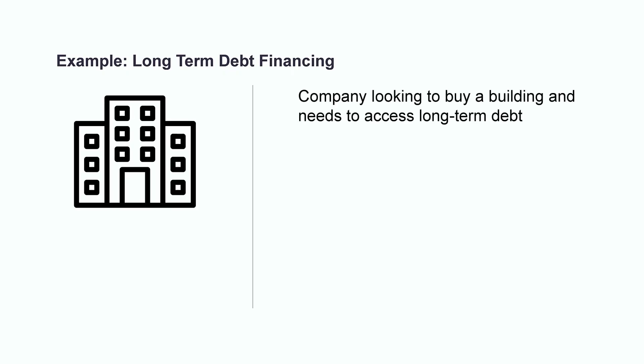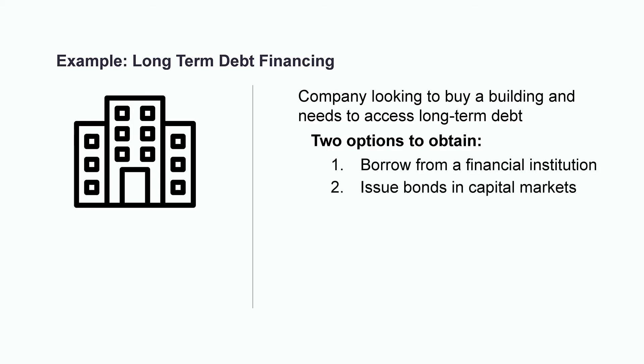Now that we've cleared that up, let's talk about the specific options a company has when looking to access long-term debt. Let's say we have a company that's looking to purchase a new office building, but they don't have enough cash. There are two primary sources for obtaining long-term debt financing: one, they can borrow from a financial institution, or two, they can issue bonds in the capital markets. If the company chooses option number one, they could enter into a legal contractual agreement with a bank or other lending institution where they would sign a promissory note, or notes payable. The value of the loan amount would be reported under the liabilities section on the balance sheet. In this case, they would be committing to pay the principal balance of the loan back at a future date with additional interest along the way.